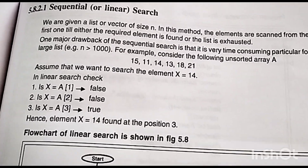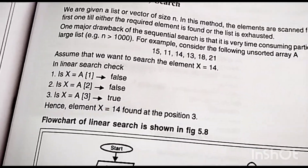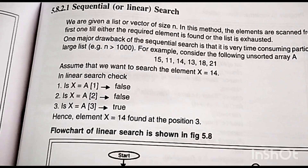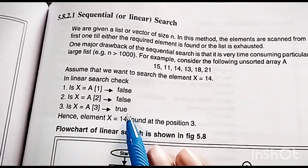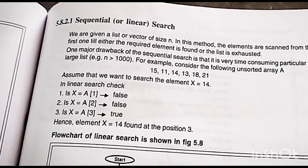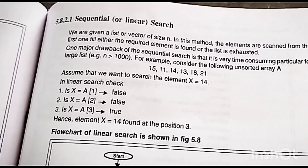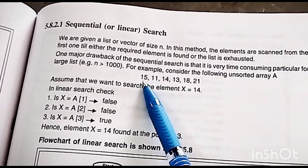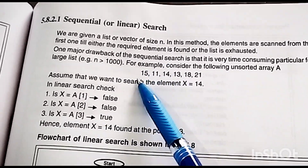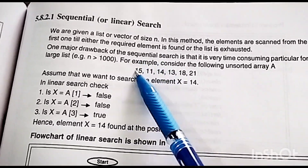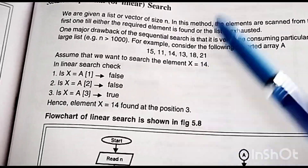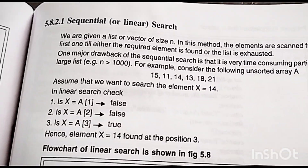So we prefer binary search. But first let's see how sequential search works. We search elements in a series — for example, if our list has elements and I want to find 5, we start with the first element. Is it 5? No. Then we go to the second, then the third. This is a very time-taking procedure.